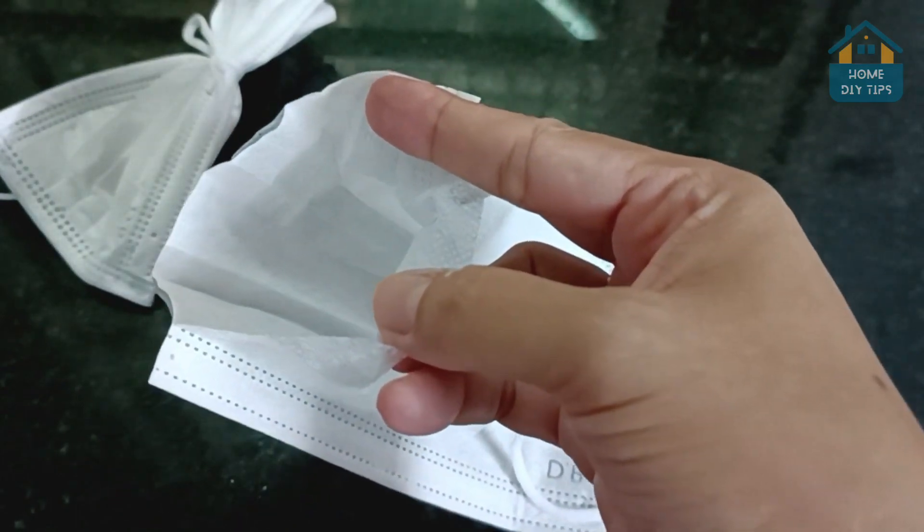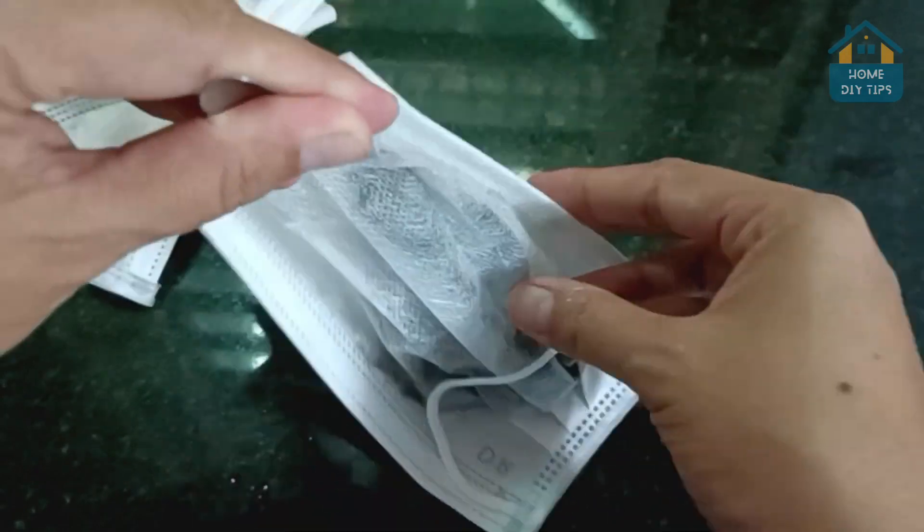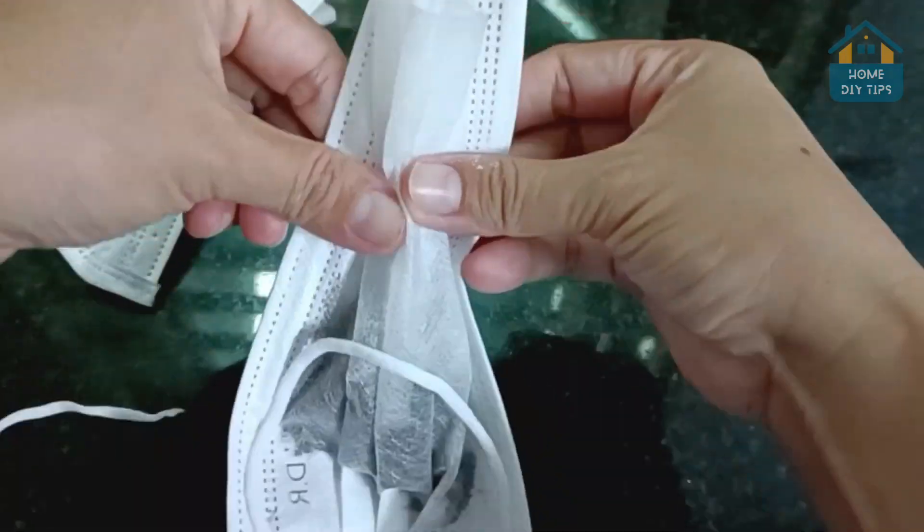Alternatively, for the second variation, we'll use this brown powder. Add a small amount of this to the face mask and seal it at the top in the same way.